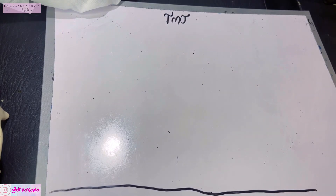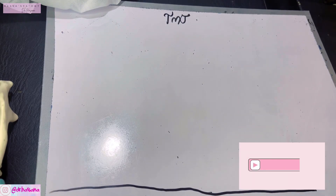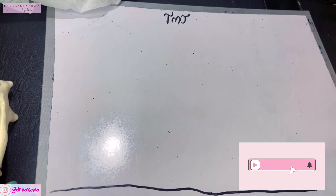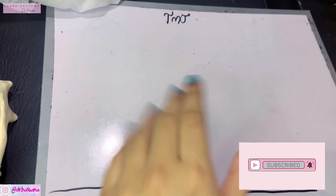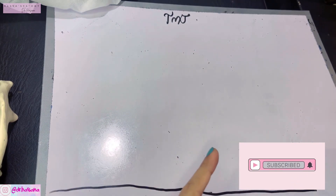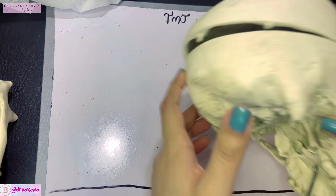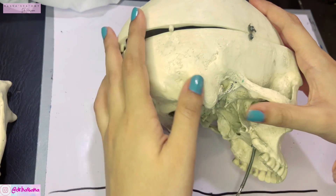Assalamu alaikum, this is Dr. Hasna with Hasna's Anatomy, and today we're discussing a very important joint of the head and neck known as the temporomandibular joint. The name says it — it is formed between the temporal bone and the mandible.